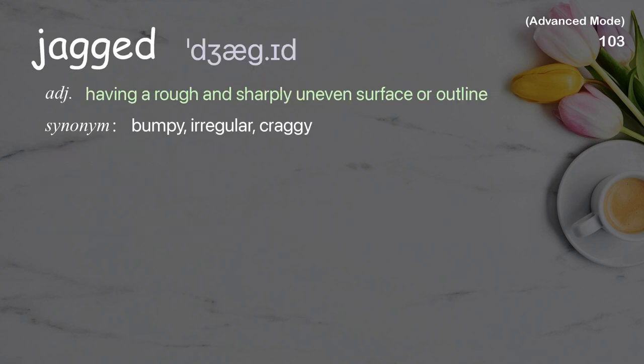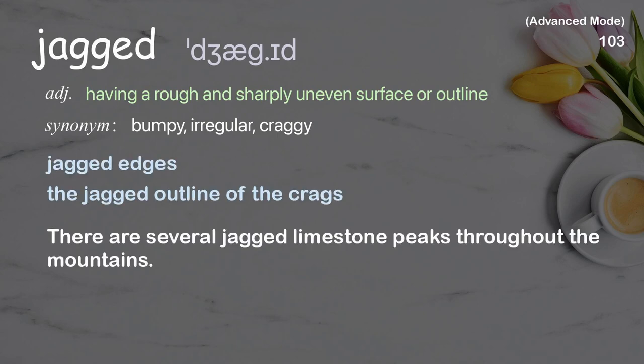Jagged: having a rough and sharply uneven surface or outline. Examples: jagged edges, the jagged outline of the crags. There are several jagged limestone peaks throughout the mountains.